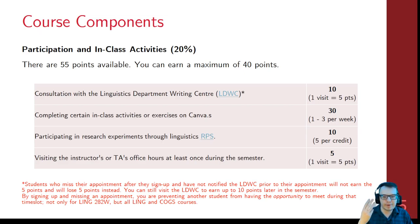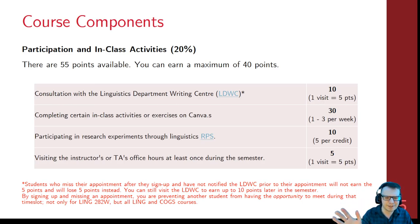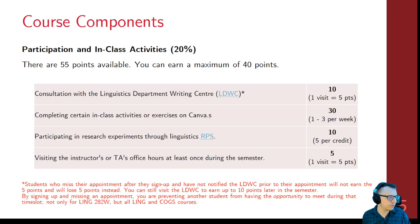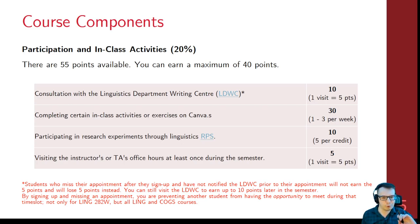As far as grading in the course, there are three main things: participation, minor writing assignments, and major assignments. Participation is in quotes because it's more like activity points — not what most people expect. The way participation points work is there are at least 55 points available and you just have to get 40 to earn 100%. You cannot go over 40, so as soon as you hit 40 you can stop worrying, or you can continue to rack them up just for fun.